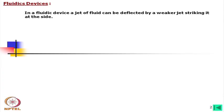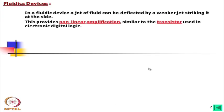In a fluidic device, a jet of fluid can be deflected by a weaker jet striking it at the side. This means a fluidic device has no moving components except the fluid itself. Imagine a fluid flowing in a direction being disturbed by another flow from a transverse direction or at an angle. This provides non-linear amplification.